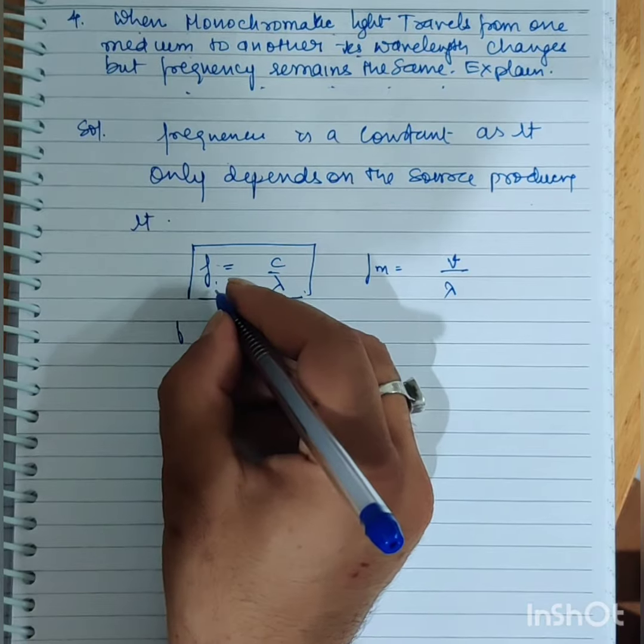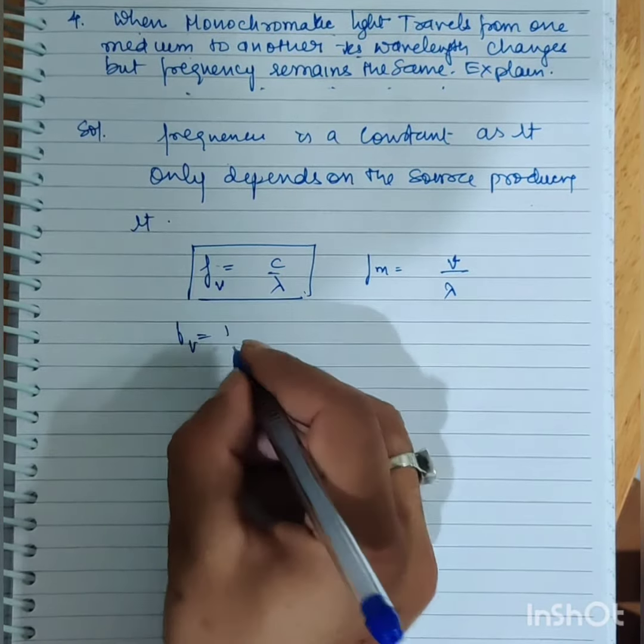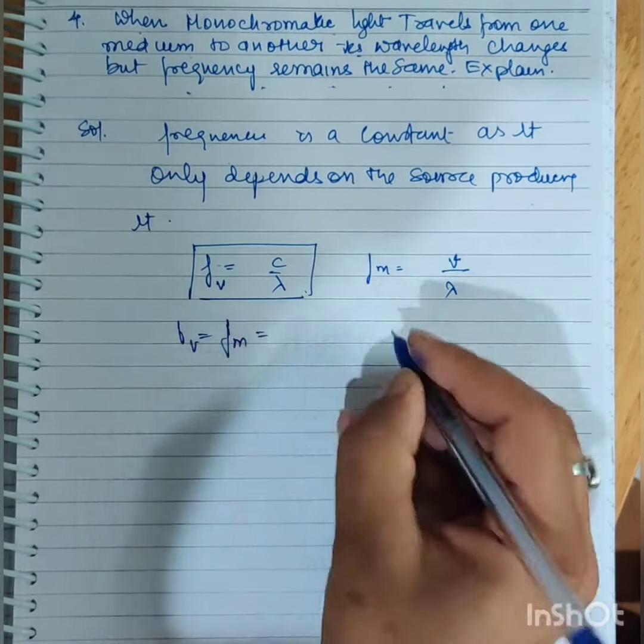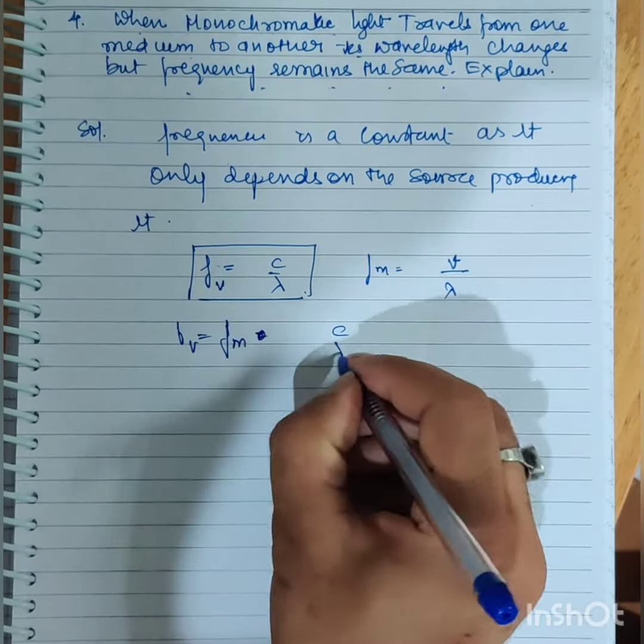But our frequency is in vacuum or medium, in both situations it remains the same. So c by lambda equals to v by lambda m.